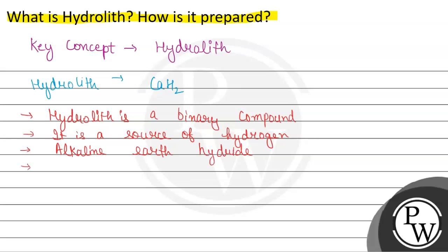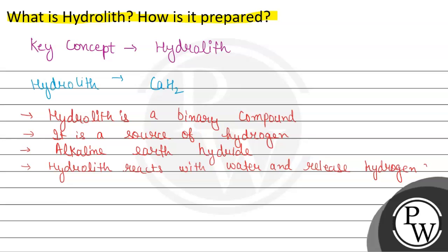If we discuss the reaction with water: hydrolith reacts with water and releases hydrogen gas. This reaction leads to the formation of calcium hydroxide, along with two molecules of hydrogen gas being released.